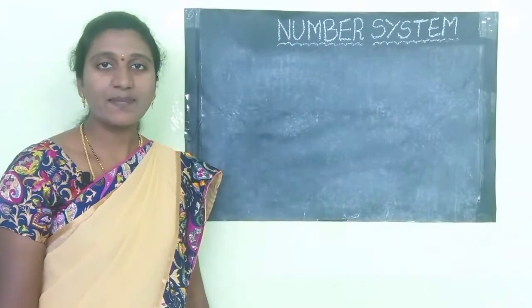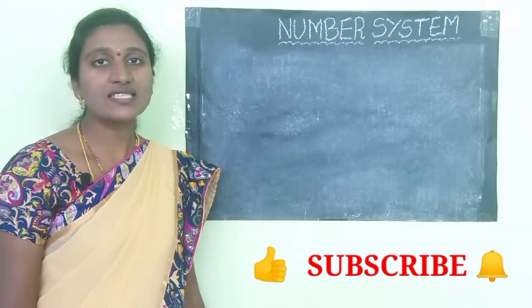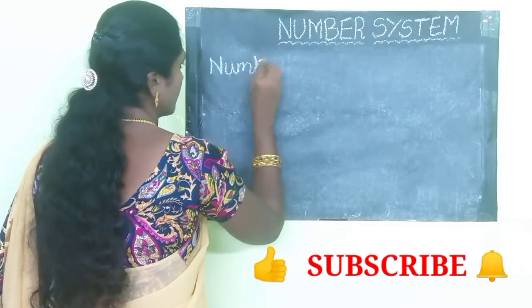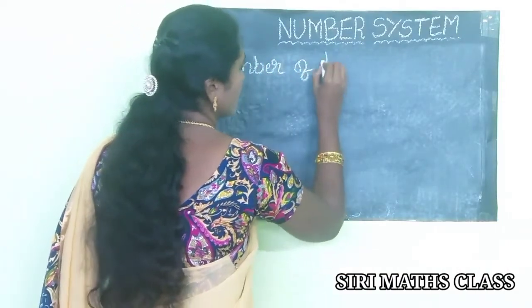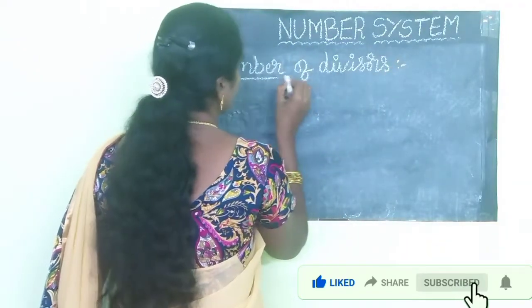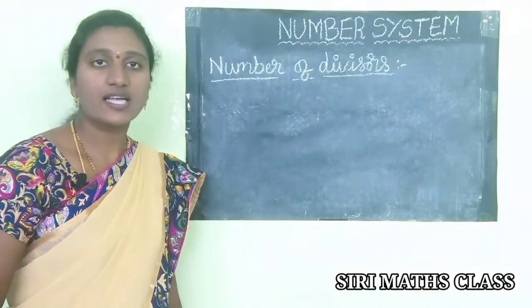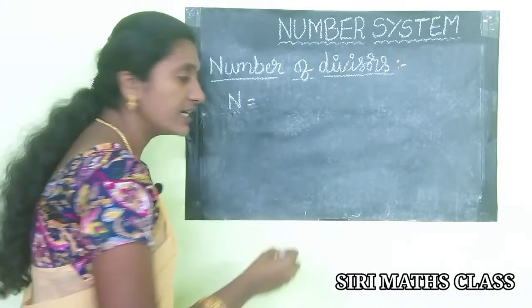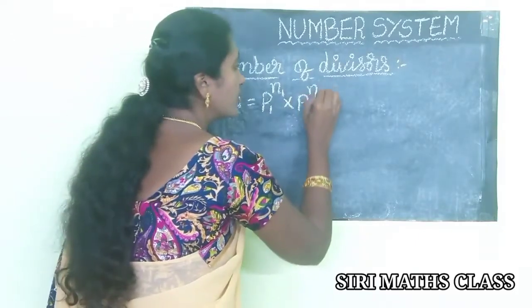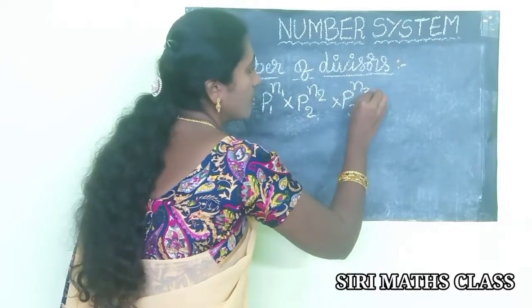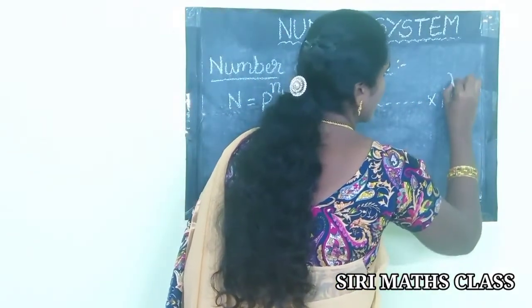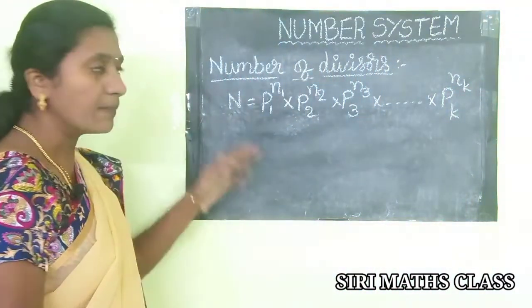Welcome to our channel. Today let us learn the number of divisors of a natural number. If n equals p1 to the power of n1 into p2 to the power of n2 into p3 to the power of n3, and so on, into pk to the power of nk, then the number of divisors is: